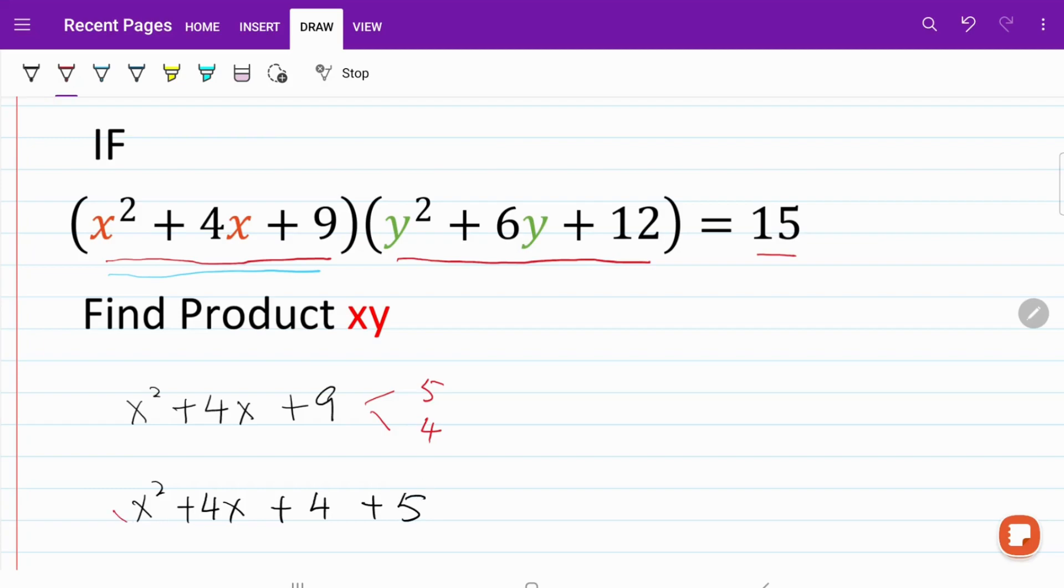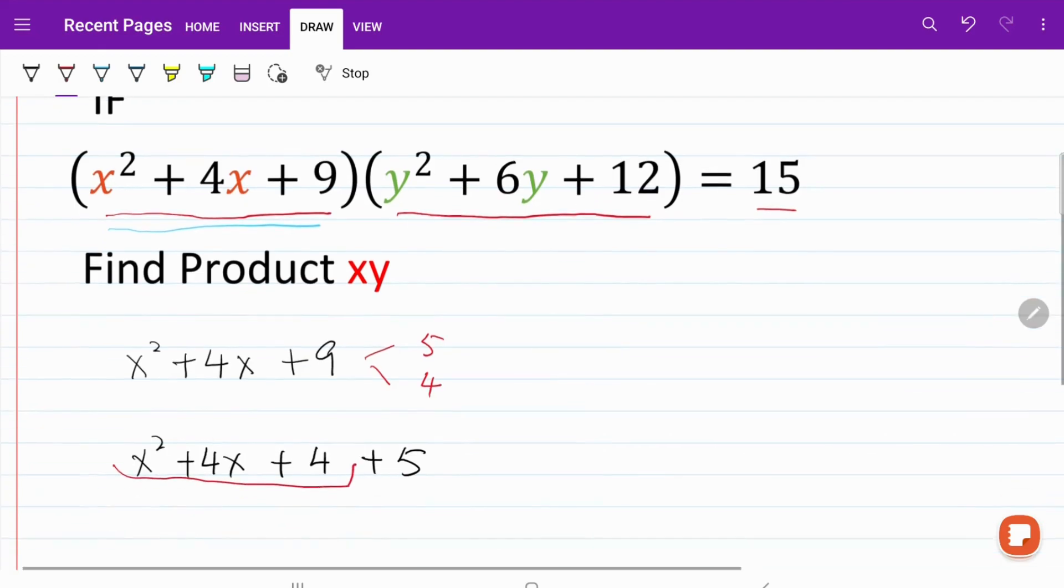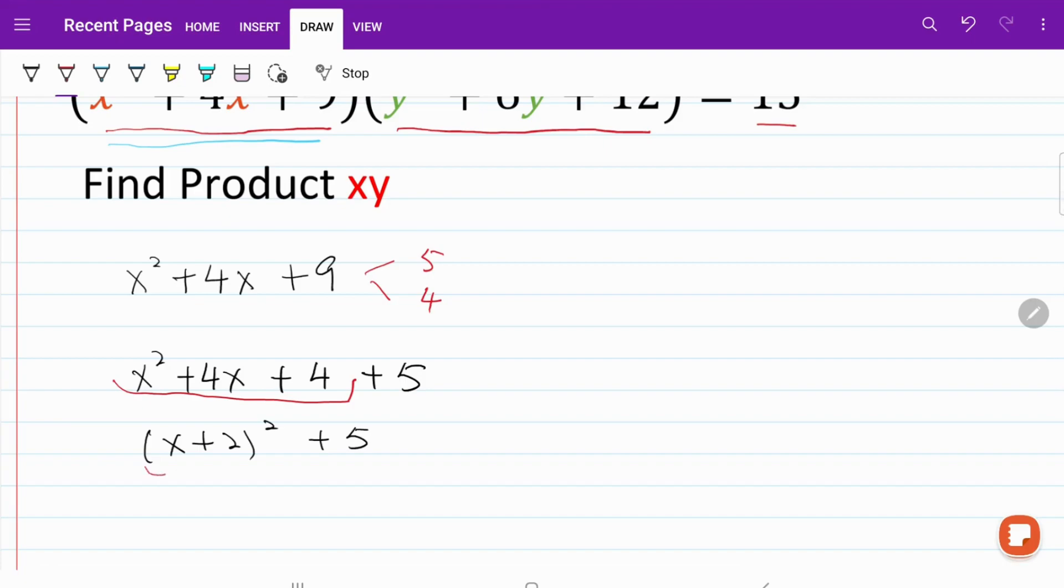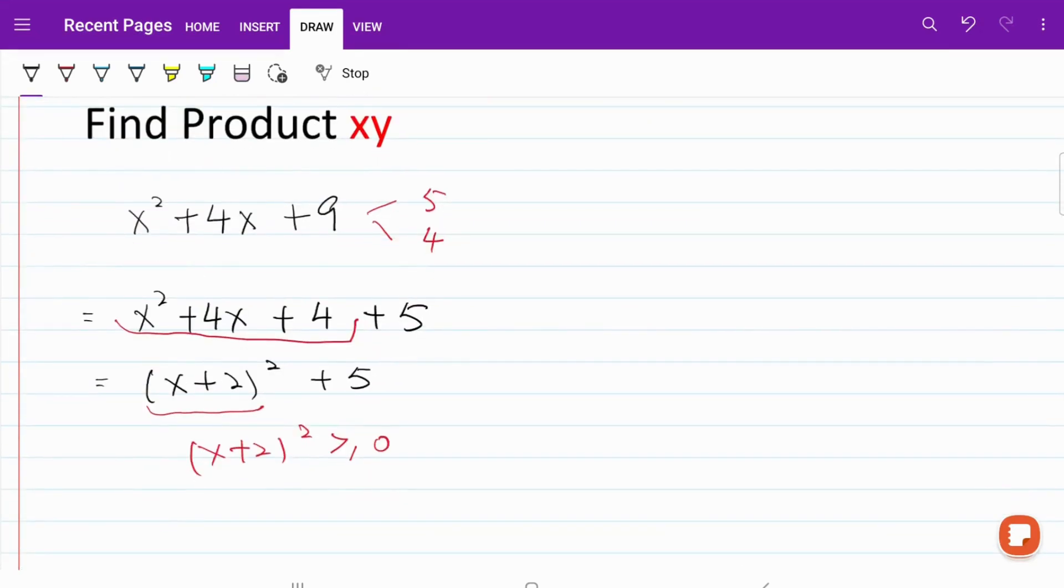Then let's go ahead and focus on this part right here. We'll notice that this is actually the perfect square of x plus 2 squared, followed by a plus 5 behind. If we look at what's inside the bracket, we know that x plus 2 squared must be greater than or equal to 0. Otherwise, it would result in an irrational value. This implies that x plus 2 squared plus 5 must be greater than or equal to 5.